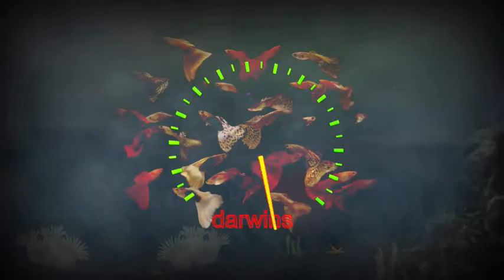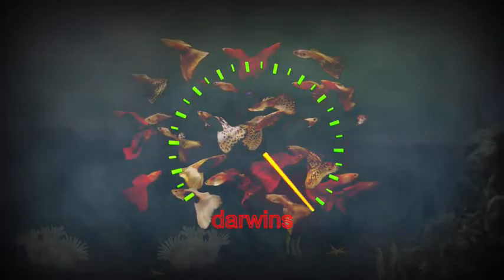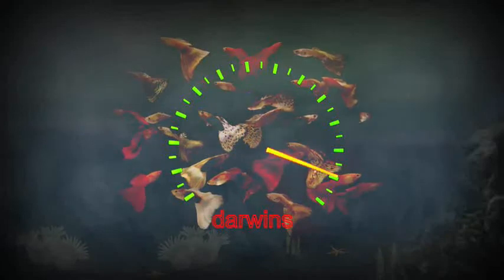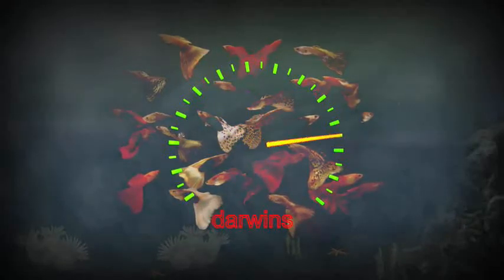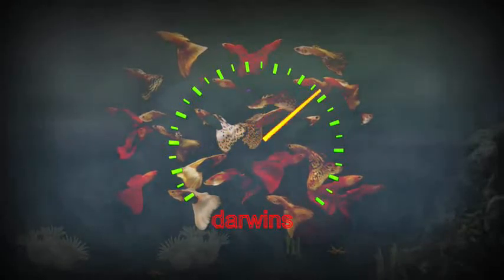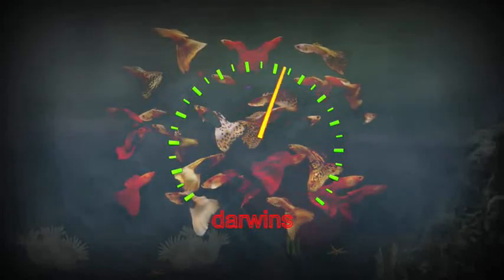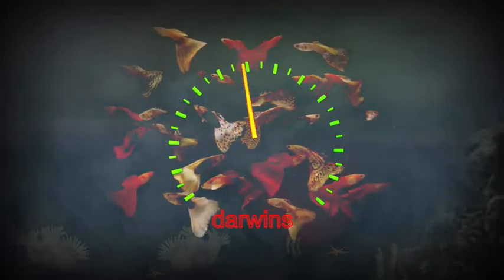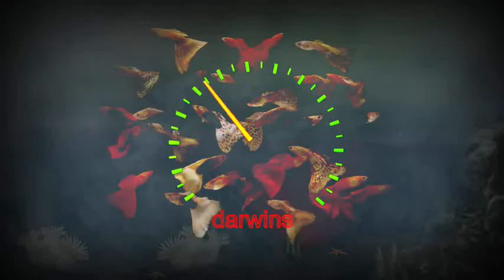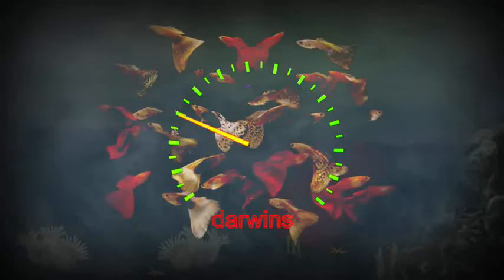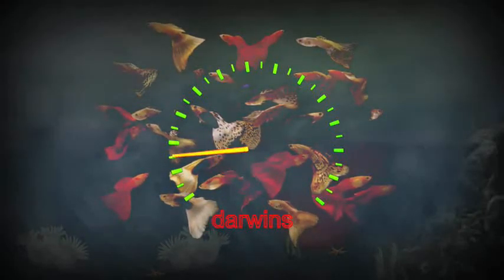A more recent paper evaluating the evolutionary rate in guppies in the wild found rates ranging from 4,000 to 45,000 darwins. Note that a sustained rate of 400 darwins is sufficient to transform a mouse into an elephant in just 10,000 years.